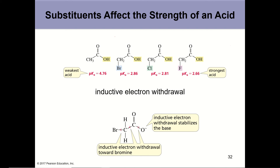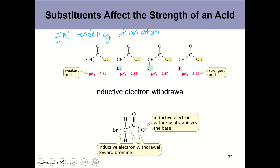We also have another trend to consider, and that is the effect of substituents on the strength of the acid. I want you to think about electronegativity — the tendency of an atom to pull electrons towards itself. So if an atom is pulling electrons towards itself, what is happening to the other bonds in the molecule? They are losing electron density, and when a bond loses electron density, it becomes weaker.